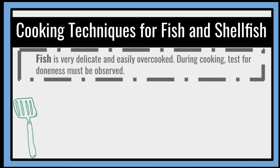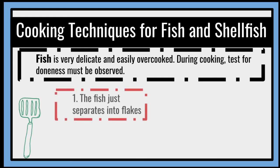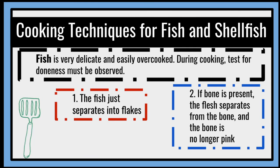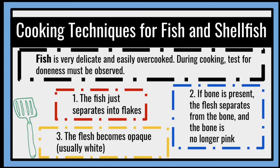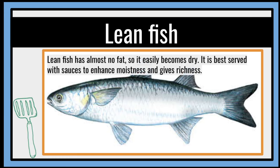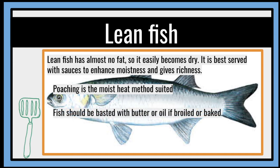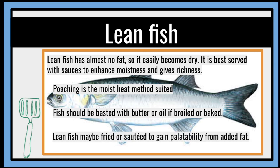Wow, good job if you have answered everything! We have some cooking techniques for fish and shellfish. Fish is very delicate and easily overcooked, so during cooking, tests for doneness must be observed most of the time. The fish just separates into flakes, and if a bone is present, the flesh separates from the bone, and the bone is no longer pink. The flesh becomes opaque, usually white. Lean fish has almost no fat, so it easily becomes dry. It is best served with sauces to enhance moistness and give richness. Poaching is the moist heat method suited. Fish shall be basted with water or oil if broiled or baked. Lean fish may be fried or sautéed to gain palatability from added fat.